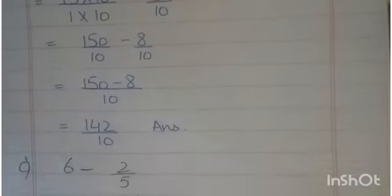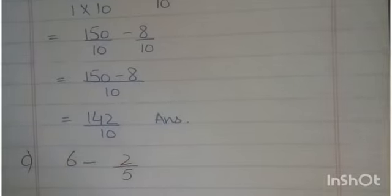Clear. Now same denominator, so 150 minus 8 by 10 you write. Next, 150 minus 8 equals 142 by 10. So your answer is 142 by 10. Here, next question number C. So students, first step: you write whole number into the fraction form.